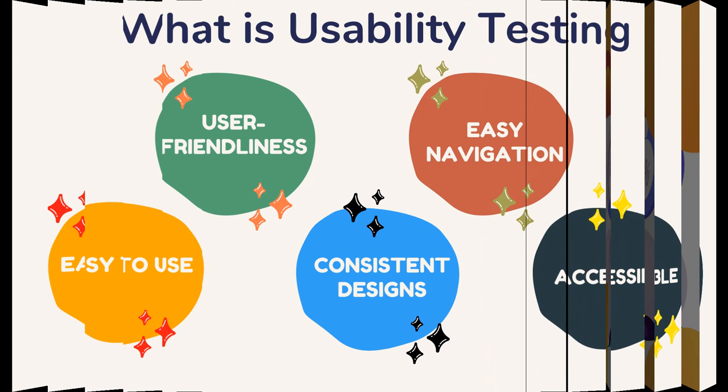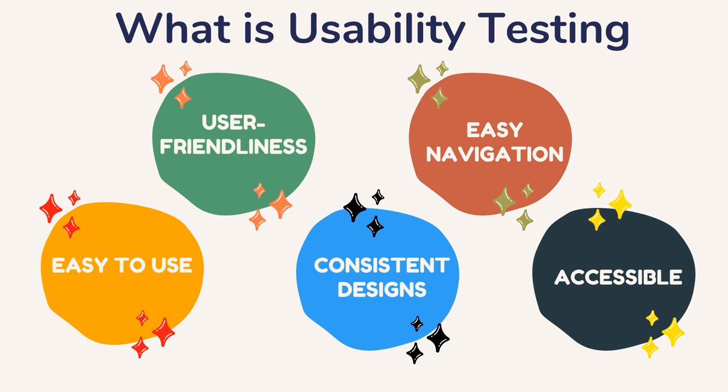What is usability testing? Usability testing is to determine whether an application or a website has the following attributes: user-friendliness, easy navigation, easy to use, consistent designs, and accessibility. Usability testing is focused on the application's user-friendly nature and is tested from the end user's point of view. An application should be easy to use and navigate for the end user while satisfying functional and business requirements. Content, color, icons, and images used should be aesthetically pleasing and consistent.